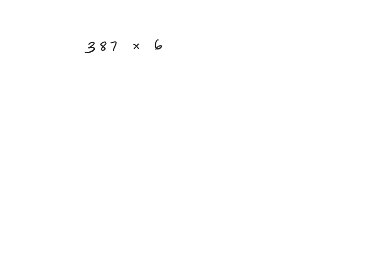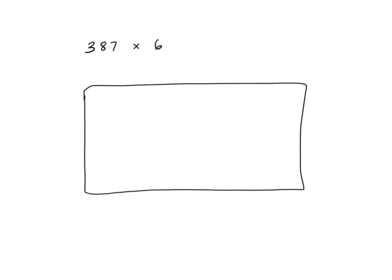Let's now take a look at how this same partial products area model could be used for a three digit by one digit problem. I'm going to draw a large rectangle. Across the top this is going to be 387, and on the side it will be 6. I'm going to split 387 into expanded form, so in expanded form that will be 300 plus 80 plus 7. Now I'm going to divide up these parts so that I have a 300 by 6 array, an 80 by 6 array, and a 7 by 6 array.